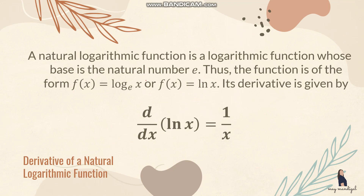Now let's cover the derivative of a natural logarithmic function. A natural logarithmic function has base e, so it takes the form f(x) = ln of x. The derivative of ln of x is equal to 1 over x. This is true if the argument is x only. If it's not x, a different formula applies, but we won't be discussing that here.